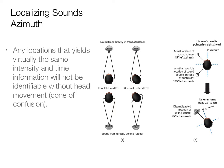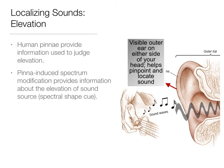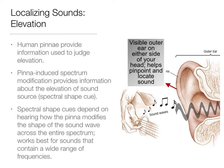Elevation is processed almost exclusively by your outer ear — the pinna. What it does is give us information about elevation in terms of a spectral shape cue. You don't need to understand the details of spectral shape cues; what's important is that the pinna is doing the work to locate sound in terms of elevation — is it above you or below you? These spectral shape cues depend on how the pinna modifies the shape of sound across the entire spectrum. Those sound waves aren't just going straight into your ear — they're hitting your pinna too, and that modifies the sound to tell you whether it's above or below.